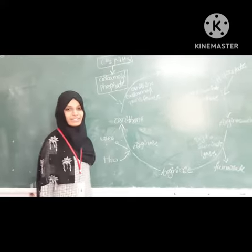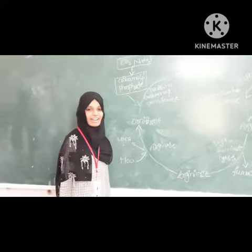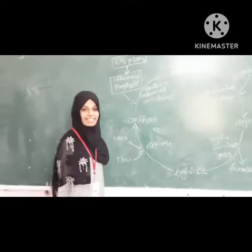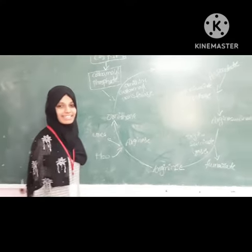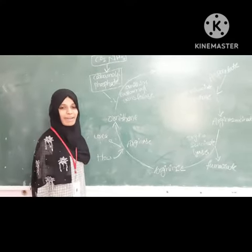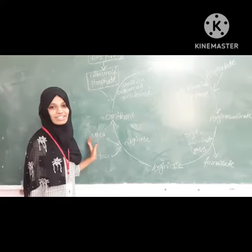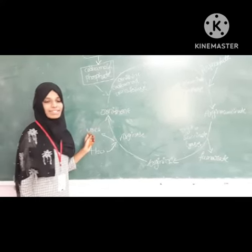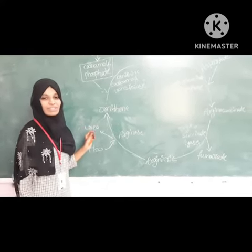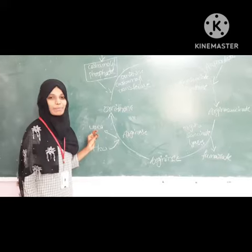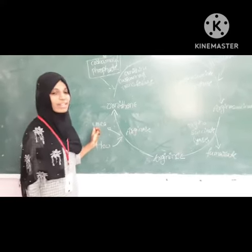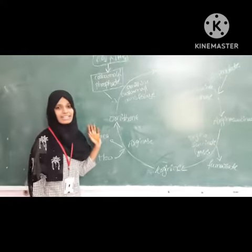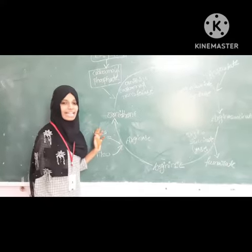Arginine undergoes hydrolysis by the enzyme arginase. Arginine is then transferred back to the mitochondria as ornithine, which is used up again in the second step of the cycle, combining with carbamoyl phosphate.